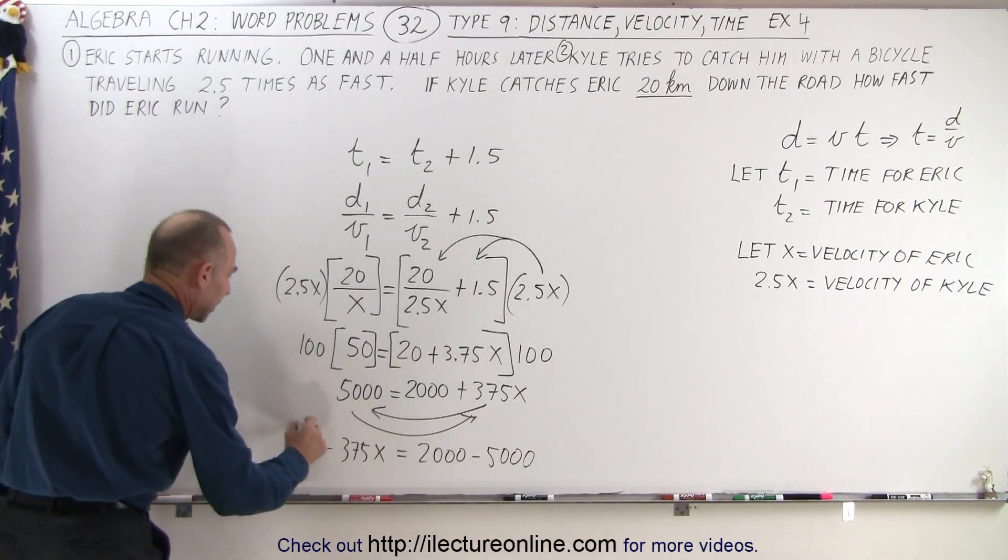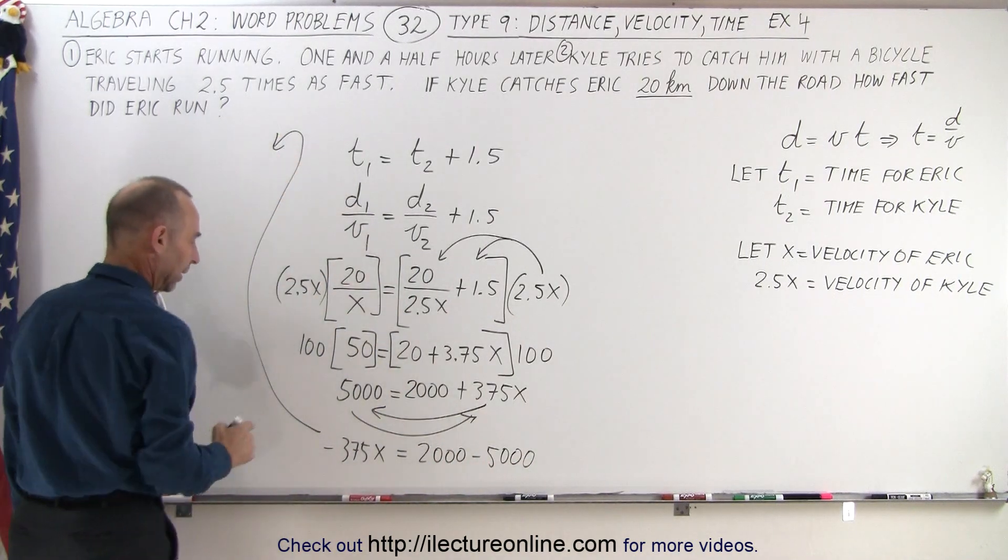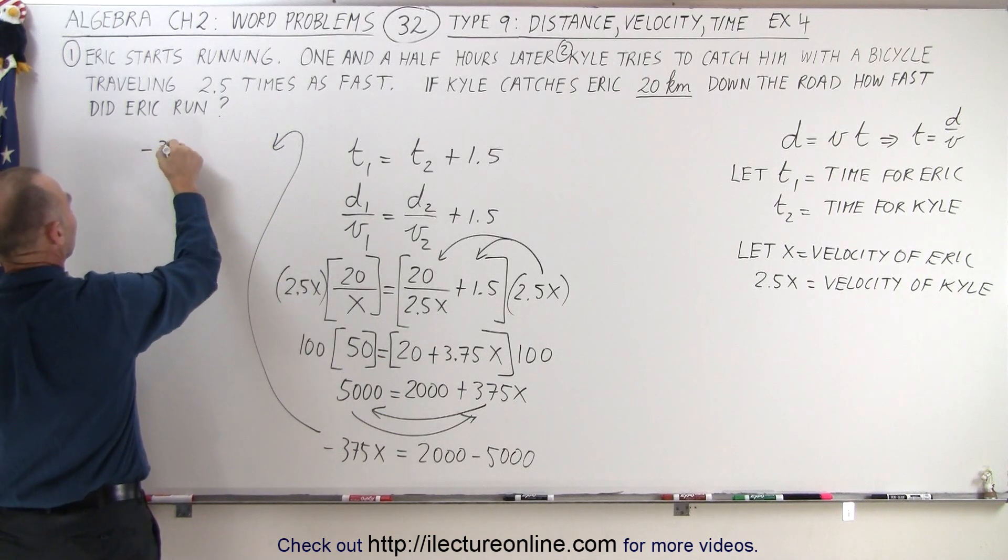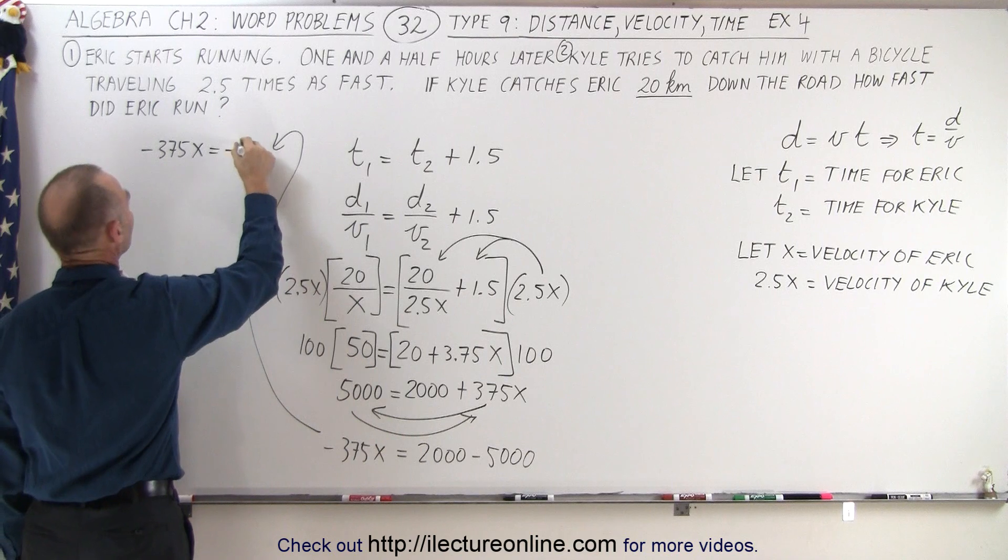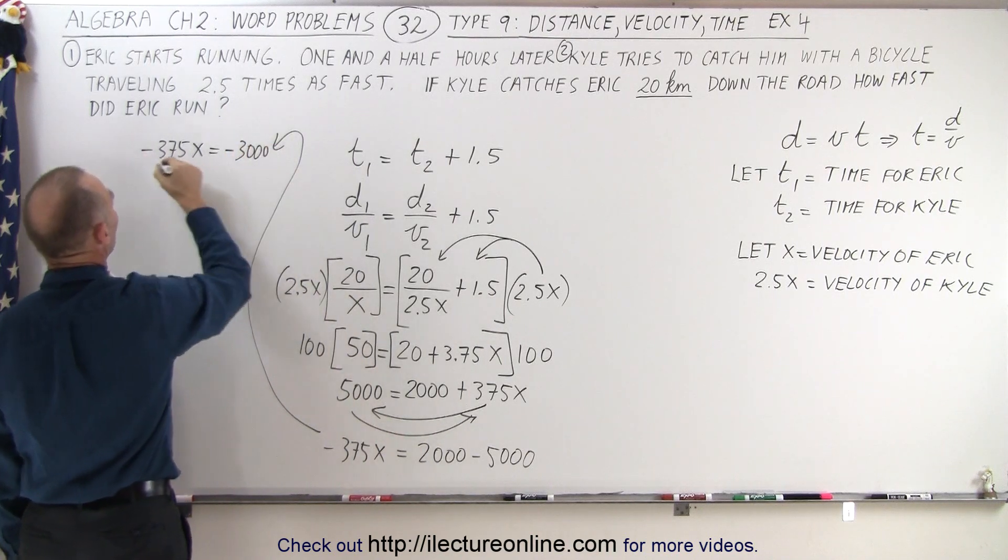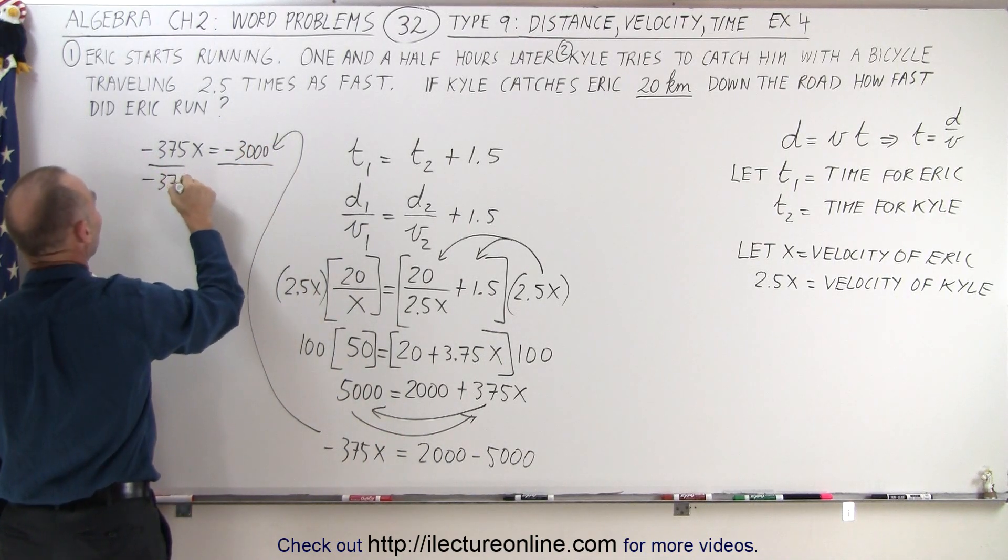All right, then I move over here to complete the problem. So that means I have minus 375x is equal to minus 3,000. And now I divide both sides by minus 375,